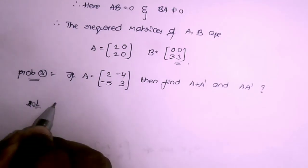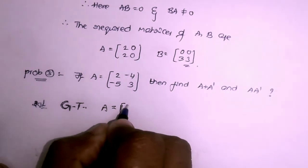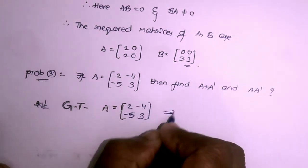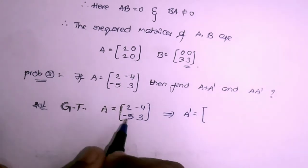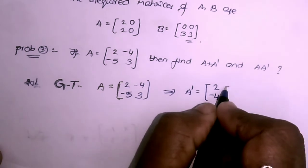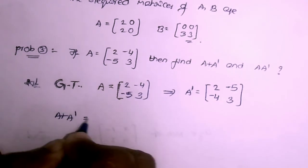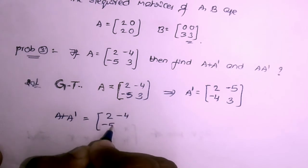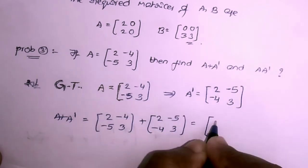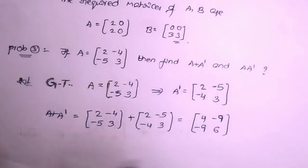Third question: if A = [[2,-4],[-5,3]], find the values of A + A' and A · A'. Given A = [[2,-4],[-5,3]], the transpose A' is obtained by converting rows to columns. A' = [[2,-5],[-4,3]]. To find A + A': [[2,-4],[-5,3]] + [[2,-5],[-4,3]] = [[4,-9],[-9,6]].